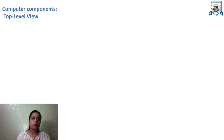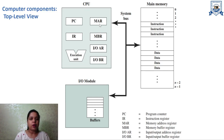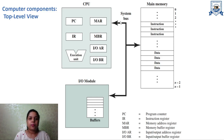Next is the top-level view of the computer components. In our computer we have the CPU, main memory, and input-output modules. The registers present in the CPU include the program counter, memory address register, instruction register, and memory buffer register, as well as I/O address and I/O buffer registers, plus the execution unit. These arrows represent the system bus, which allows communication between the CPU, main memory, and I/O module.